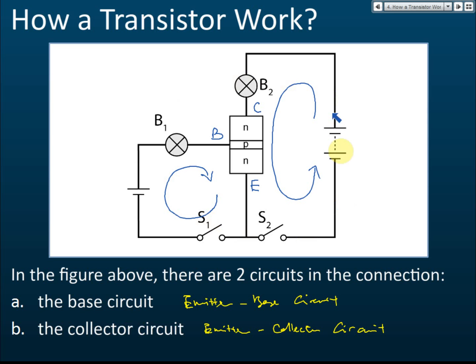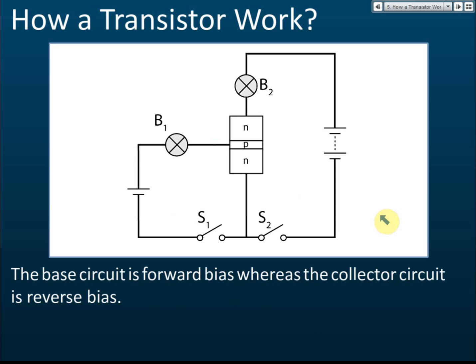You must know these two circuits, because if you know them then you know whether the connection is correct or not. Now, in a transistor the base must always be connected forward bias. Forward bias is when the positive terminal of the cell connects to p-type and the negative terminal connects to n-type. The collector circuit is always reverse bias.